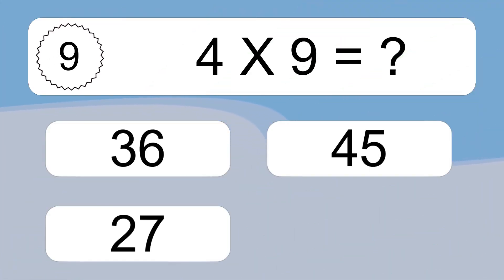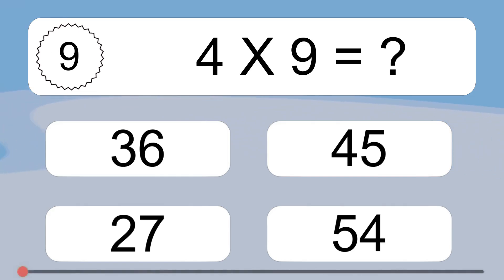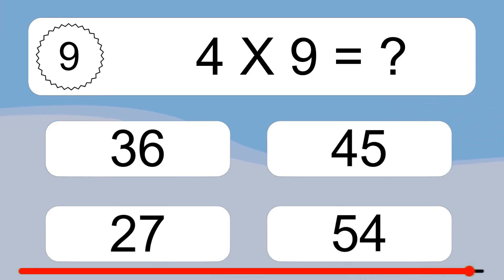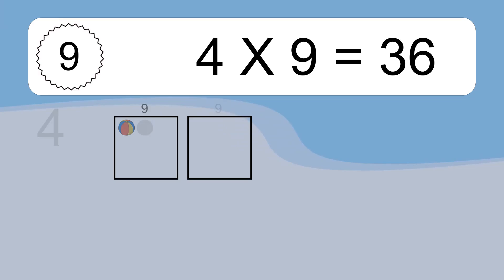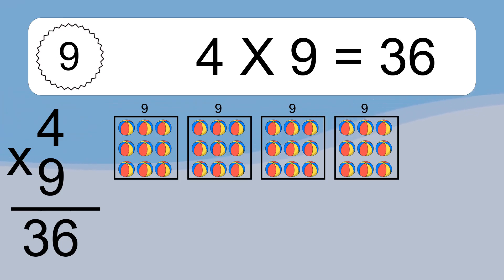Four times nine equals what? Four times nine equals 36. We have four boxes, and each box has nine colorful balls inside. If you count all the balls in all the boxes together, you will have four times nine balls. This equals 36 balls.